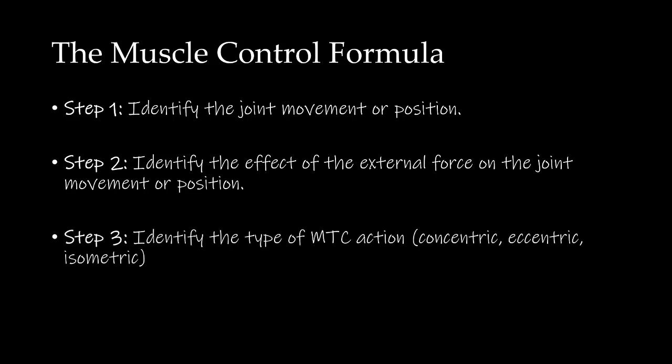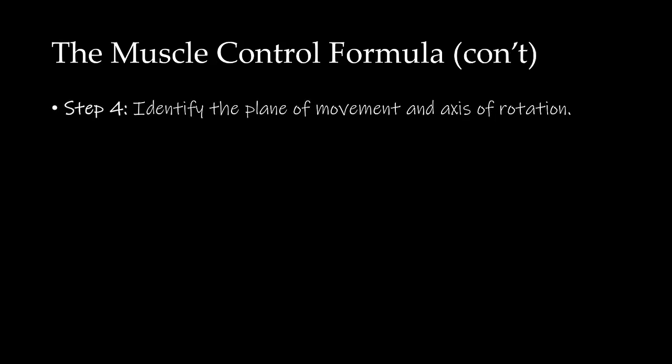Step 3 was to identify the type of MTC action — whether it was concentric, eccentric, or isometric. We determined that since the joint action was across gravity, the MTC action was going to be concentric. In Step 4, we identified the plane of movement and the axis of rotation. We determined that the plane of movement was the transverse plane, and the axis of rotation was a longitudinal axis through the head of the humerus.